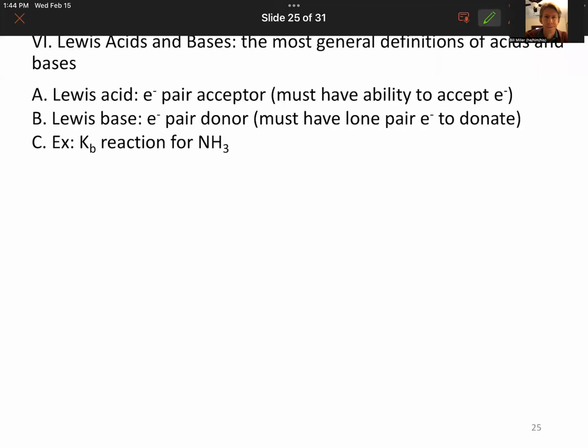Finally, at the end of this unit, Lewis acids and bases. These definitions for acids and bases are the most general definitions that I know of. They're more general than the Bronsted-Lowry definitions, which were in terms of protons or H+. A Lewis acid is an electron pair acceptor and must have the ability to accept electrons. A Lewis base is an electron pair donor and must have a lone pair of electrons to donate.